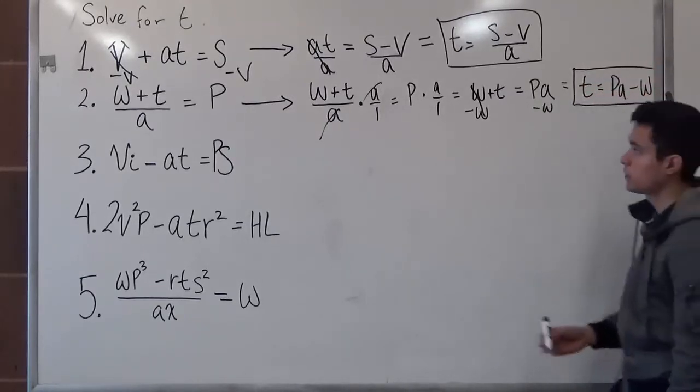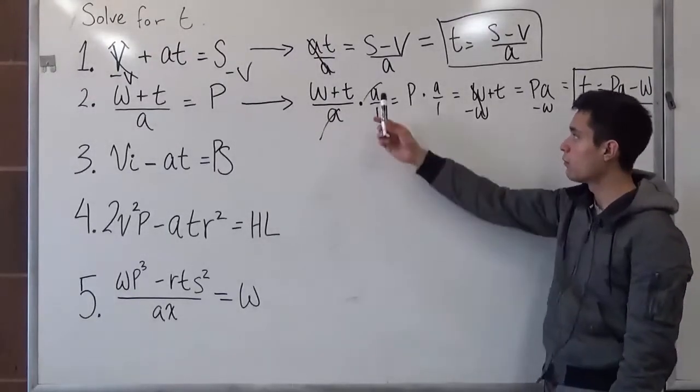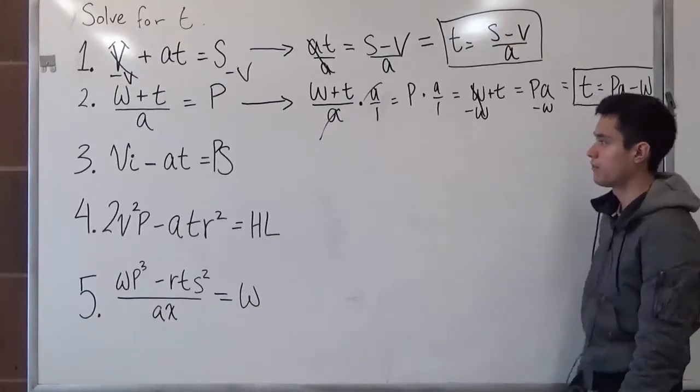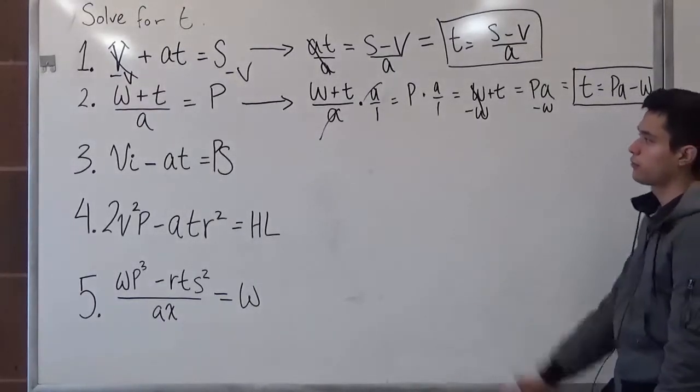So as you can see, when you have a denominator, you want to multiply it to both sides so that it cancels out. So now let's move on to problem number three.